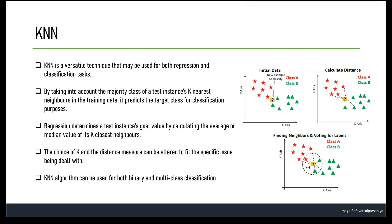KNN predicts the target class of a test instance based on the majority class of its K nearest neighbors in the training dataset. For example, if you have a dataset of flowers with features such as petal length and petal width, and you want to classify a new flower, KNN finds its K nearest neighbors — say K=5 — and assigns the majority class of those neighbors to the new flower.